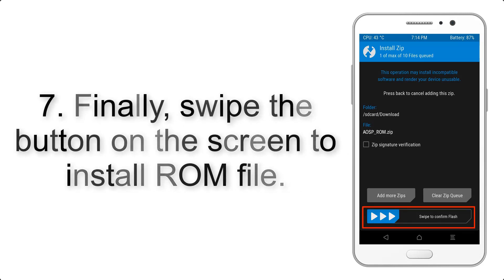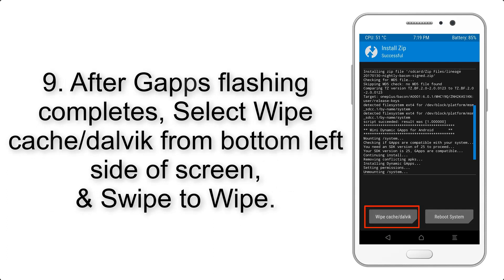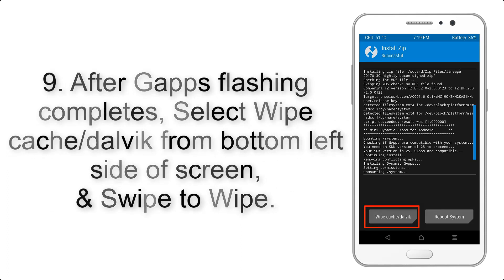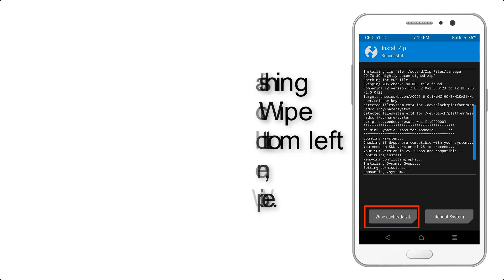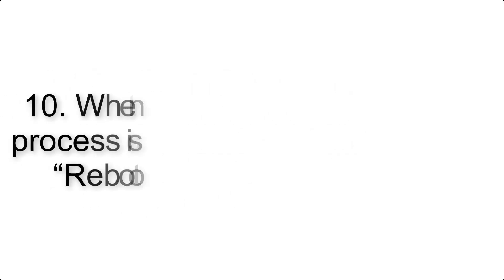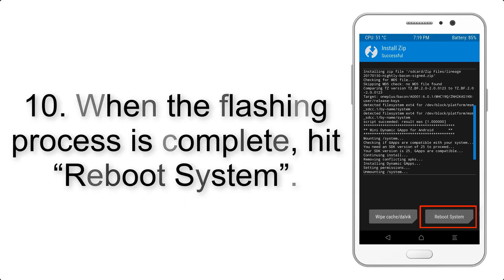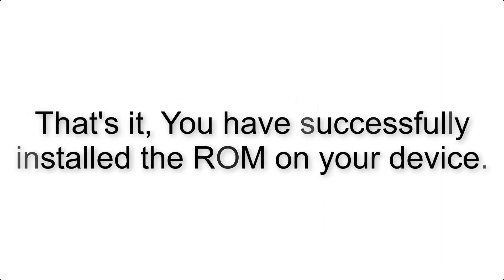Step 9: After GApps flashing completes, select Wipe Cache and Dalvik from the bottom left side of the screen and swipe to wipe. Step 10: When the flashing process is complete, hit Reboot System. That's it — you have successfully installed the ROM on your device.